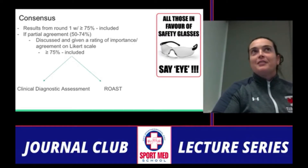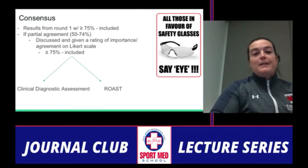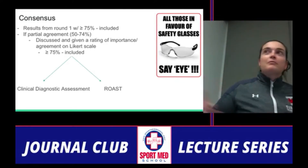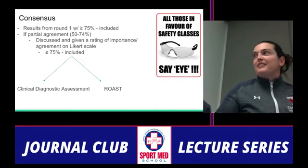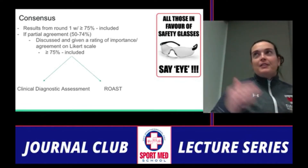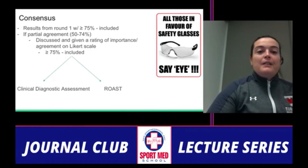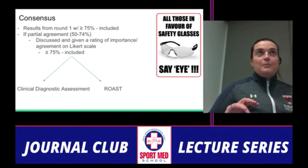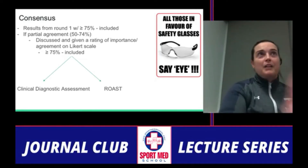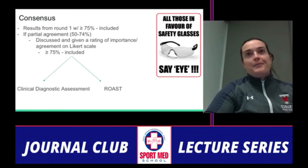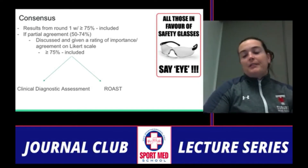From round one, anything with above 75% agreement was automatically included. Partial agreement items went to a second meeting where, if discussion led to an adjusted Likert score above 75%, they were included as well. This led them to build two things: a clinical diagnostic assessment — which is fairly standard — and the ROAST assessment acronym for additional components once diagnosis is reached.